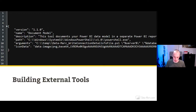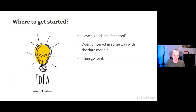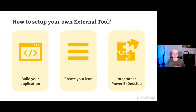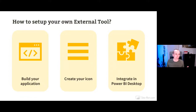Building your own external tool comes down to three steps. First and biggest: build the application itself. Second: create an icon in base64 format — you can create something in Paint or Photoshop and use a base64 image converter website. Third: create a JSON integration file and place it in a specific location so Power BI Desktop loads it on startup. The path is: Program Files > Common Files > Microsoft Shared > Power BI Desktop > External Tools. You need to create an icon to show in the top ribbon and the integration file defining your tool.